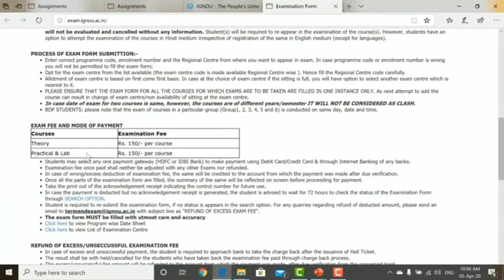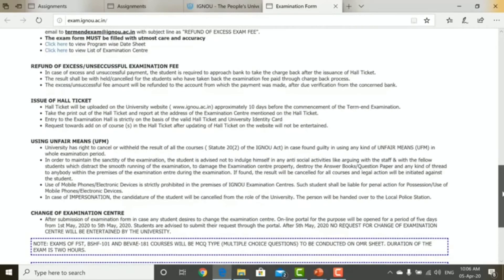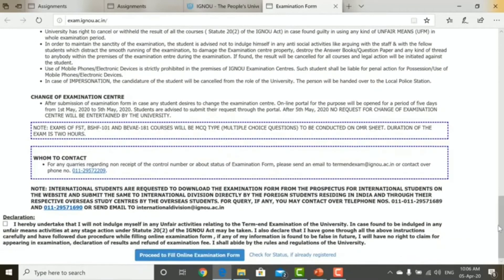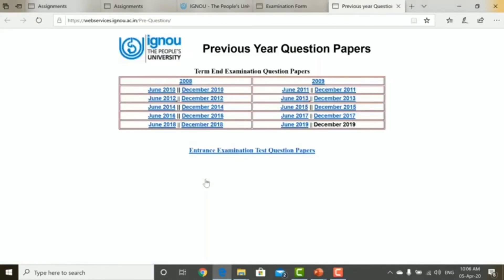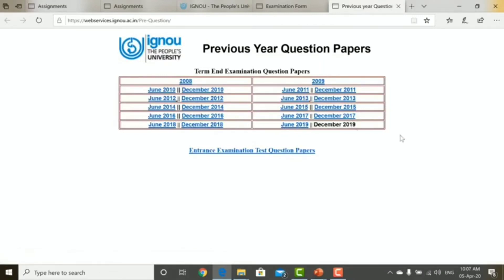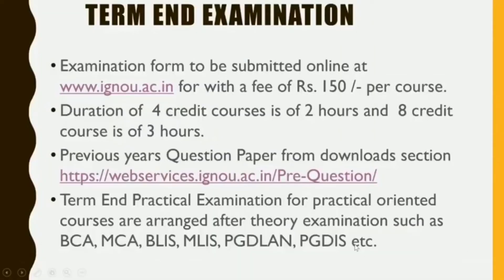The examination form is submitted online. On the IGNOU website, go to 'Register Online' and click on 'Term End Examination'. You will find all guidelines and instructions for submission of the online term end examination form. The fee is ₹150 per course for theory and ₹150 per course for practical. Read all instructions carefully, then click the declaration and proceed to submit your examination form. The duration of the exam for four-credit courses is two hours and for eight-credit courses is three hours. Previous years' question papers from 2008 to 2019 are available on the IGNOU website for exam preparation.